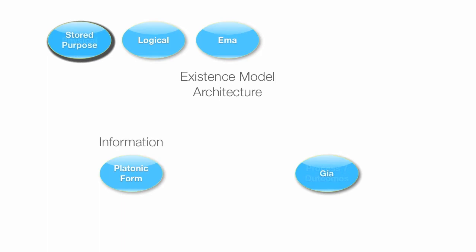So, the existence model's information store is the Platonic Form. And we went back to Plato in 380 BC, a really good book if you would like to read that, The Republic.